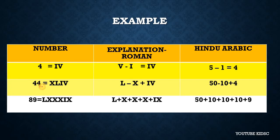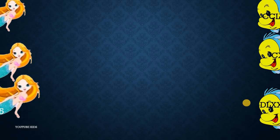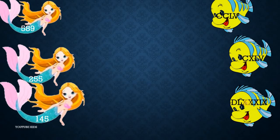Now we have to see 40. 40 means XL, because L minus X equals 40, and 50 minus 10 equals 40. For 89, notice that the smaller letters are written on the right, which means adding: L plus X plus X plus X plus X equals 50 plus 10 plus 10 plus 10 plus 10, which is 80.